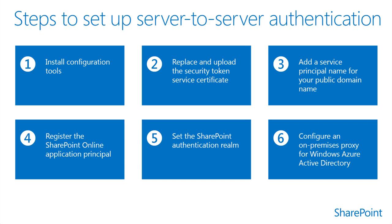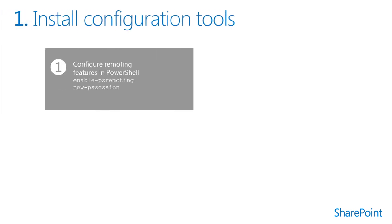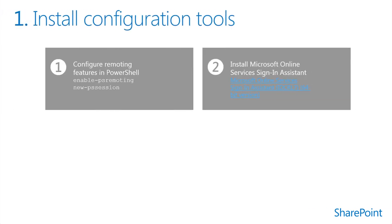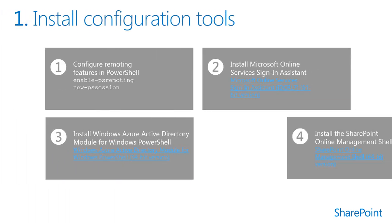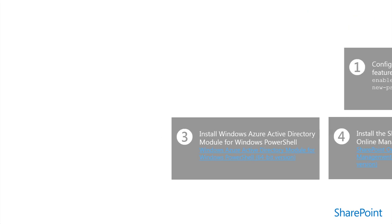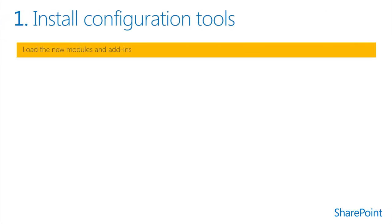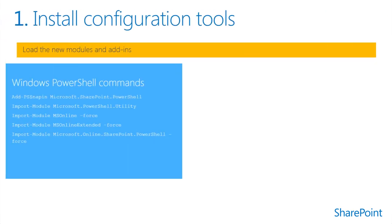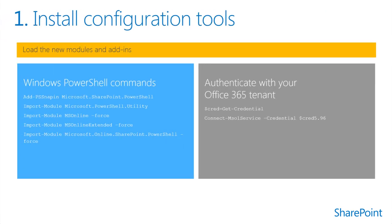To continue, you need to install the following on an on-premises SharePoint 2013 web server: the Microsoft Online Services Sign-in Assistant, the Azure Active Directory module for Windows PowerShell, and the SharePoint Online Management Shell. In this step, you'll load the modules you've downloaded so you can use them in your Windows PowerShell session.